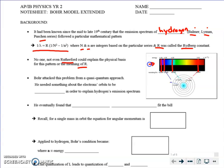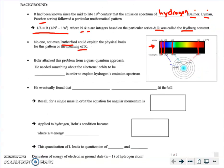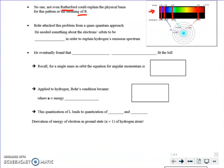So Bohr comes along in the early 19-teens — early 20th century — and he attacks this problem from a quasi-quantum approach. He mixed classical physics with quantum physics. To Bohr's credit, he wasn't hampered by the old-school approach. He said: we know this quantum thing seems to be real, let me apply it to an atom. Because if you think about it, spectral lines are quantized — they're discrete values, not a continuous spectrum.